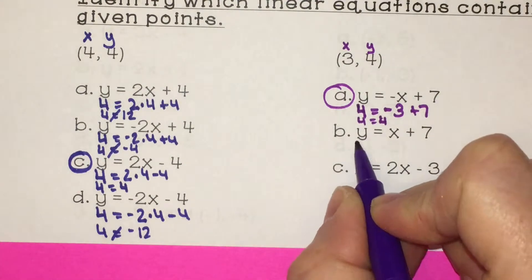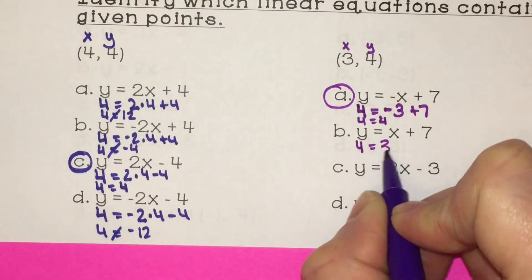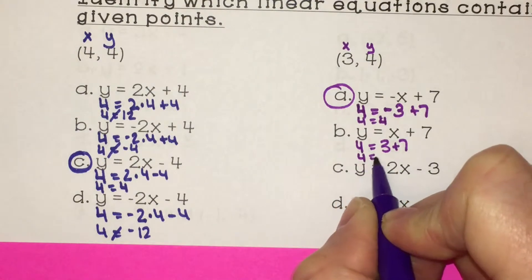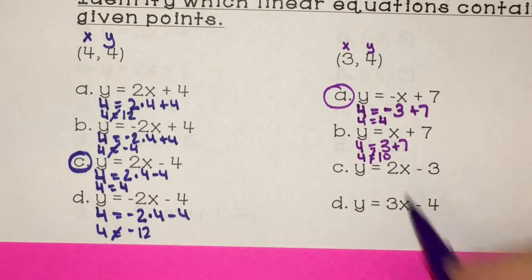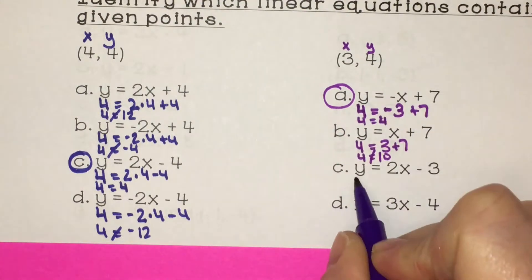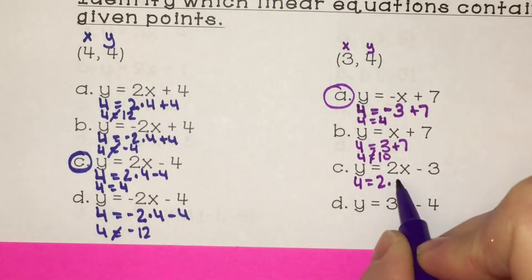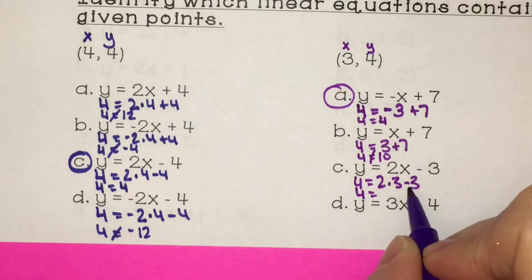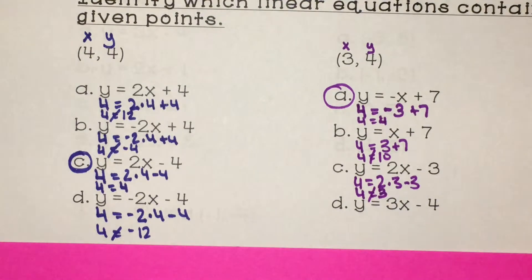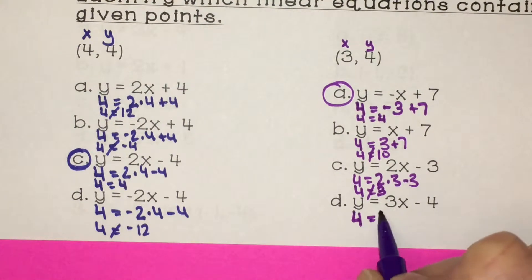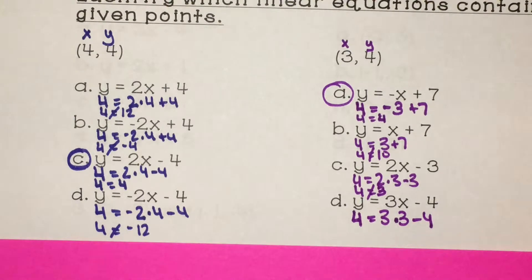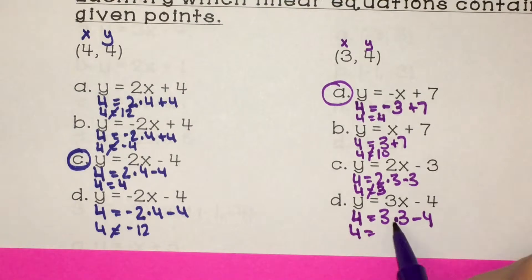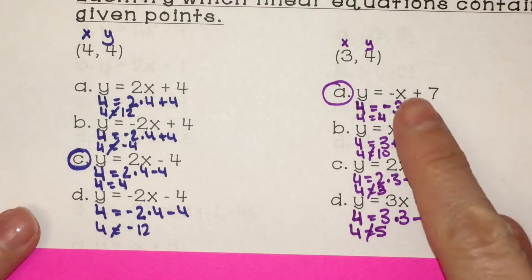I'm just going to try the rest. We have 4 equals 3 plus 7 — well, 4 does not equal 10, so that one doesn't work. Next: y is 4 equals 2 times 3 minus 3. We have 4 equals 2 times 3 is 6, and 6 minus 3 is 3 — 4 does not equal 3. Last one: the y value is 4 equals 3 times 3 minus 4. We have 4 equals 9 minus 4 is 5 — 4 does not equal 5. So A is the only one that works.